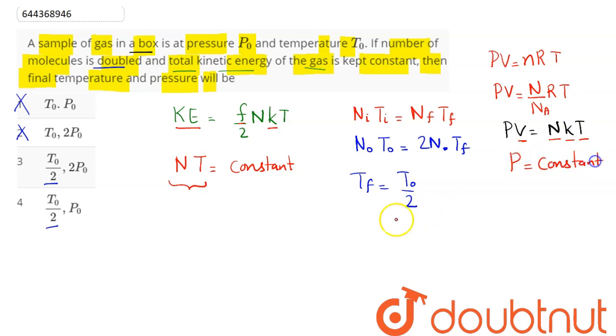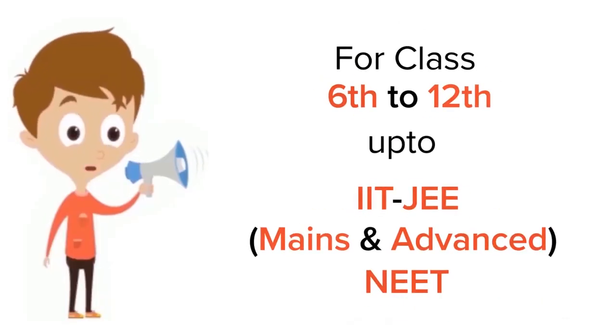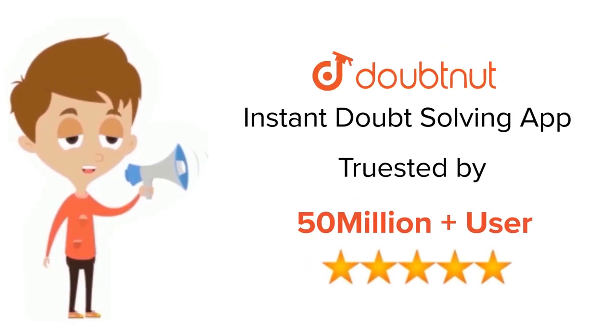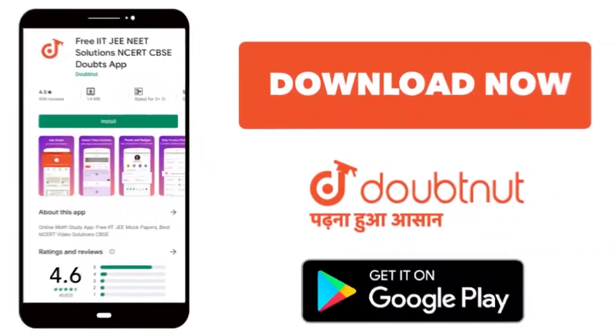constant. Therefore, final pressure equals initial pressure P₀. Hence, option 4 is the correct answer. For Class 6 to 12, IIT JEE and NEET level, trusted by more than 5 crore students, download Doubtnet today.